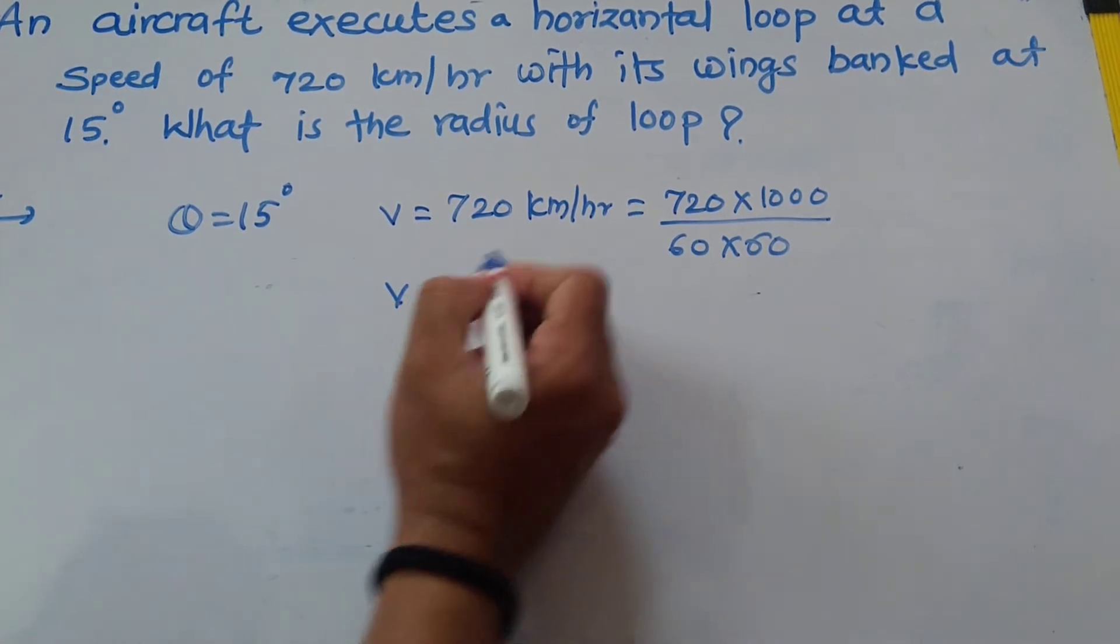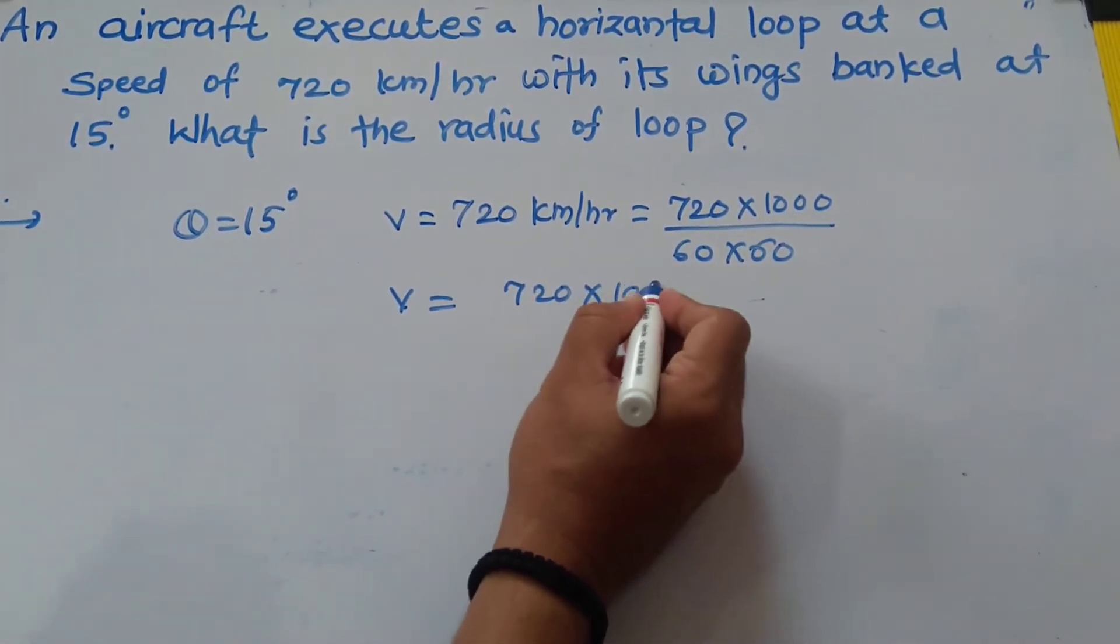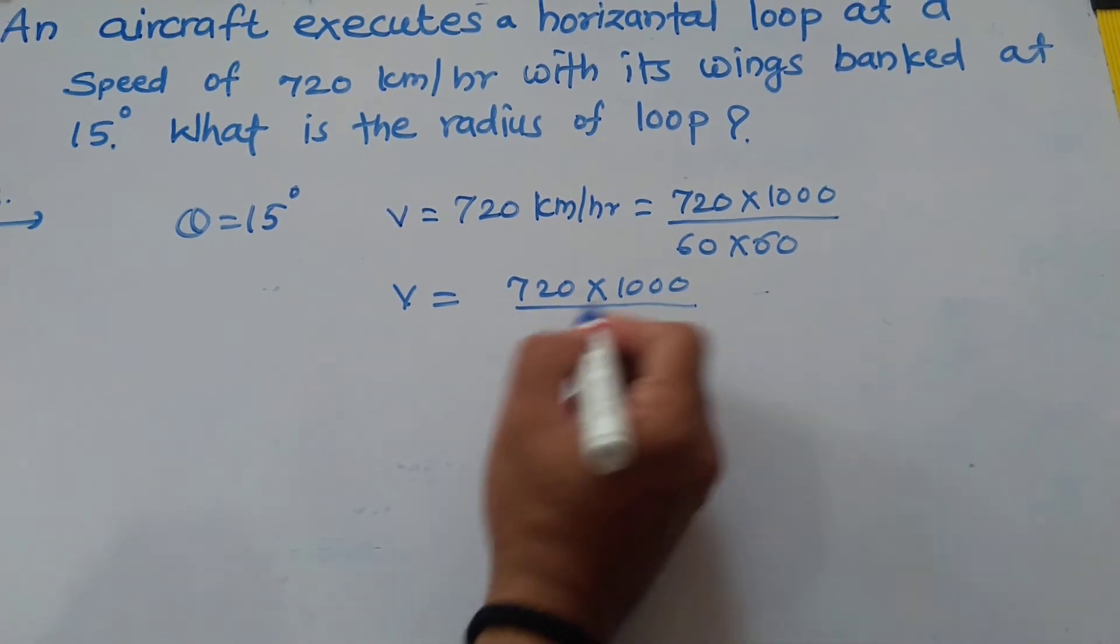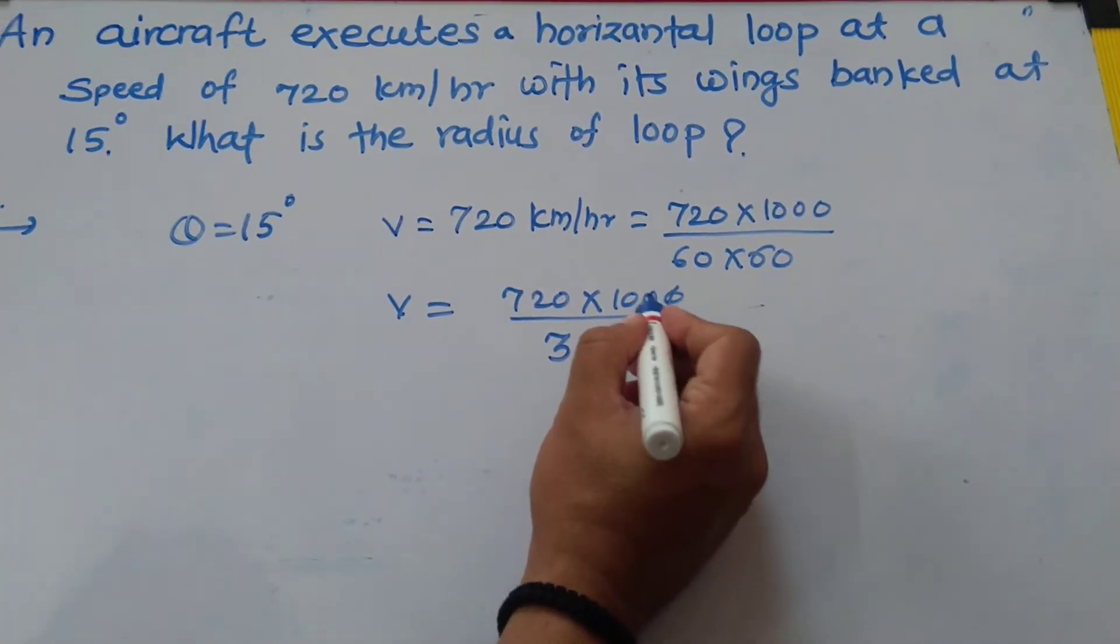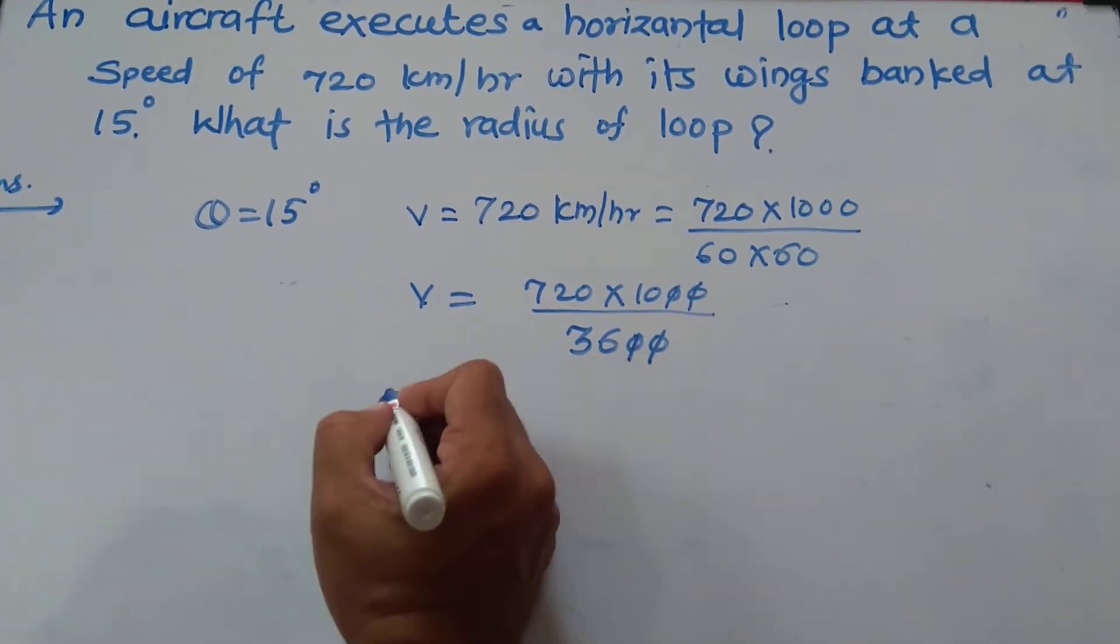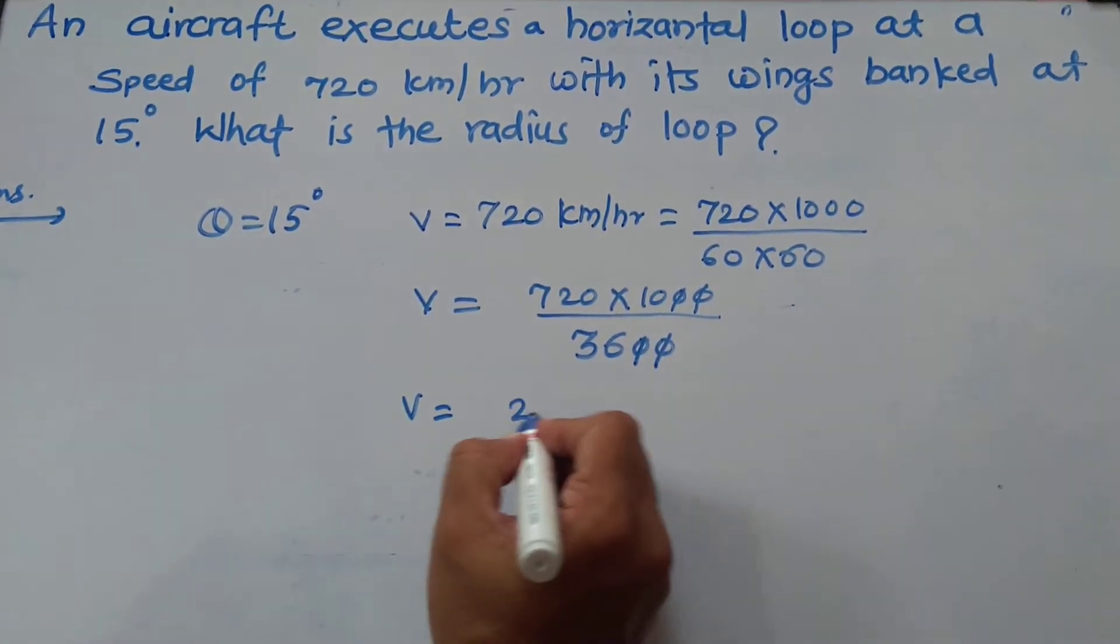Therefore V equals 720 × 1000 upon 36000, which gets cancelled. Therefore V equals 200 meters per second.